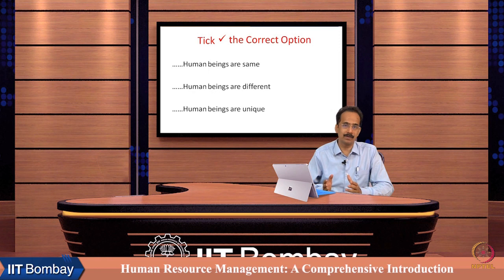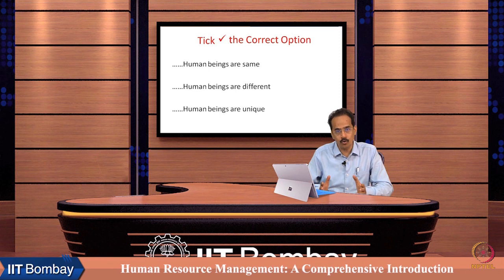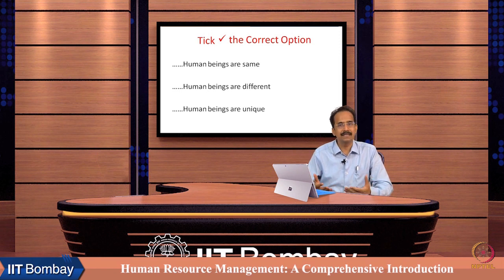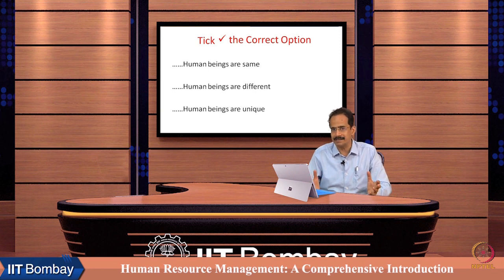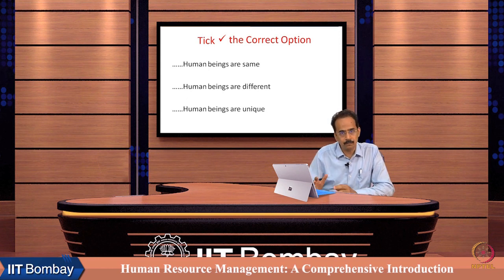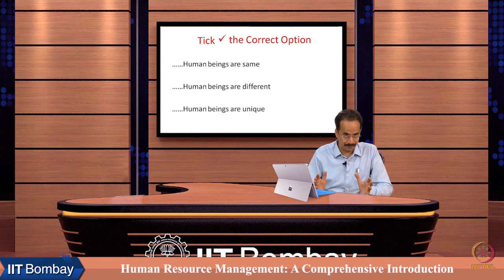The second option is also correct because human beings build communities, and communities are built on common goals or common identities. For example, we are Indians, there are some Americans, similarly there are some Buddhists, there are some Muslims, similarly there are groups of football lovers, photography lovers, cricket players, etc. So football lovers or cricket followers are different in comparison to those groups which do not have interest in these games. So human beings are different as well.